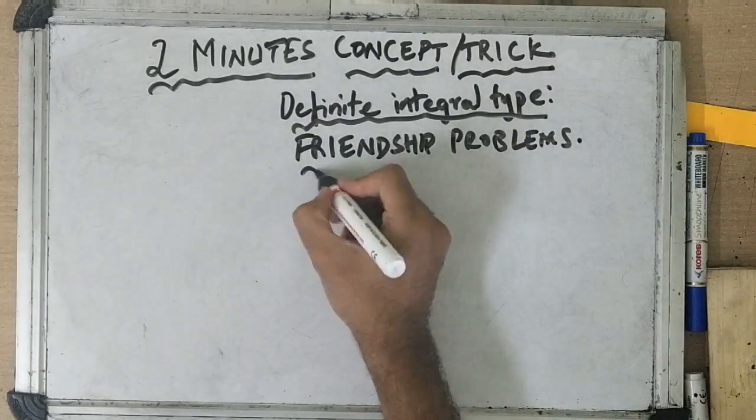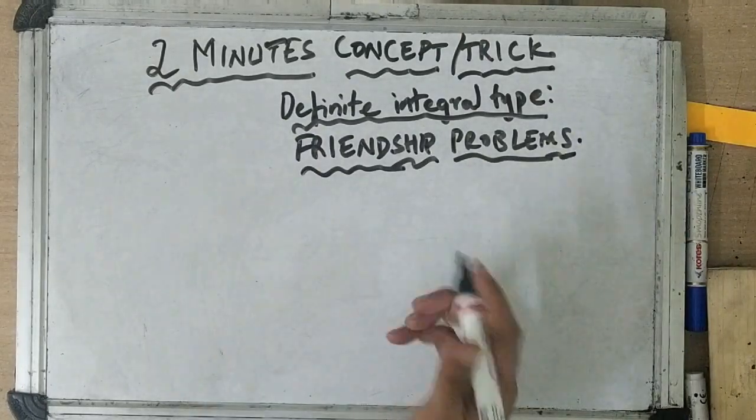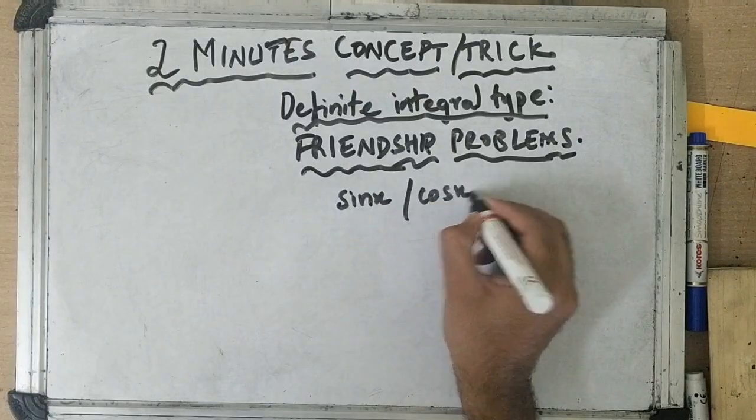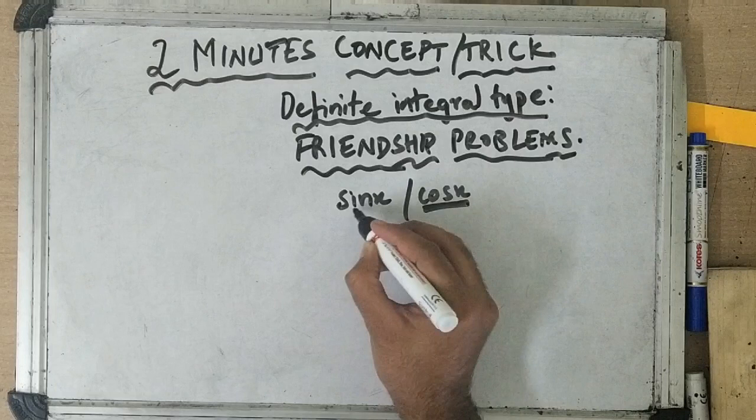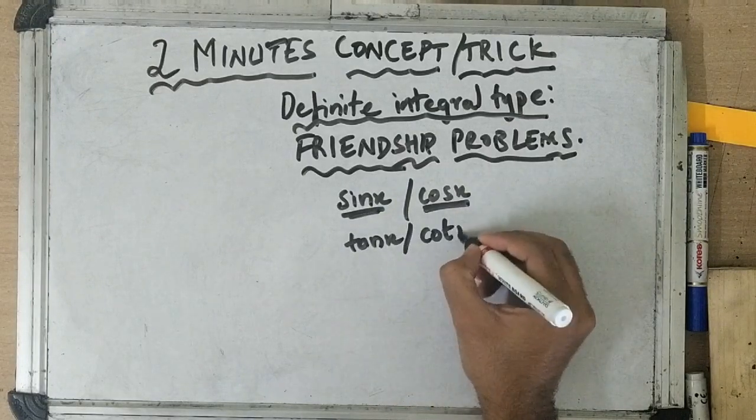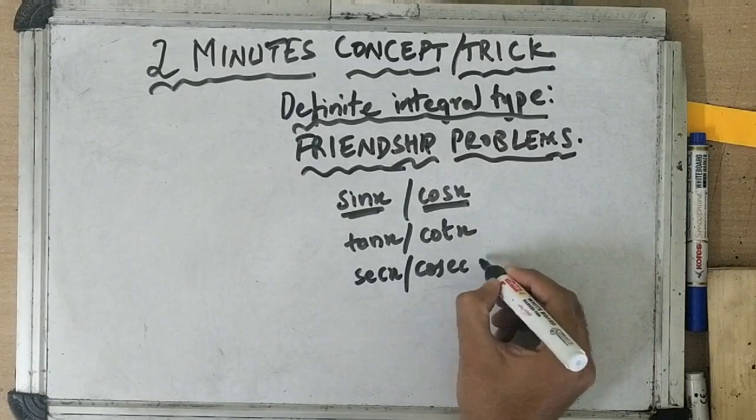So when we talk about friends, friends are who help each other out, who share similar traits. So I call sin x and cos x as friends because cos of 90 minus theta is sin theta. Tan and cot are also friends. Secant and cosecant are also friends.